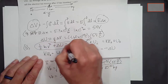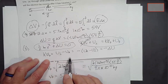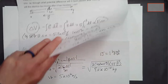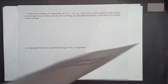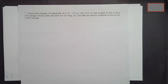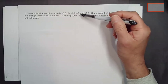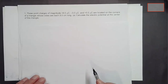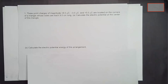We used conservation of energy to figure out the speed. We'll be using these ideas quite a bit in this unit. The next problems involve calculating electric potential for various charge distributions. The first one: we have three point charges — 8 microcoulombs, negative 3 microcoulombs, and 5 microcoulombs — located at the corners of a triangle whose sides are each 9.0 centimeters long. Calculate the electric potential at the center of the triangle and the electric potential energy of the arrangement.